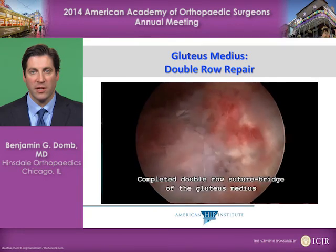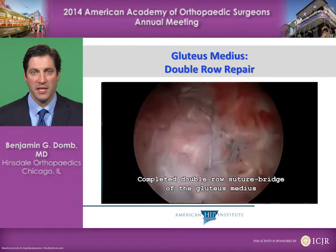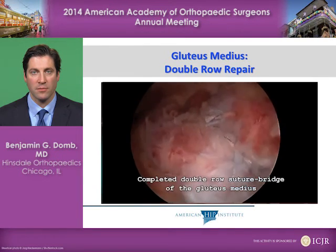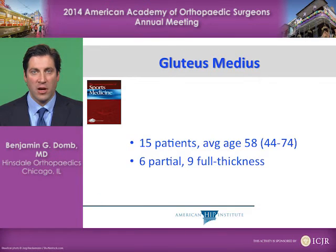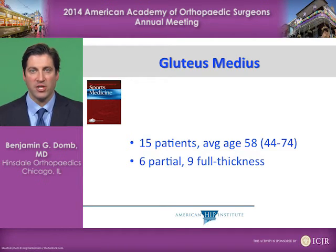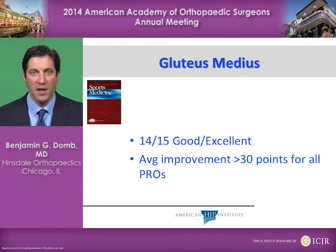Here is the completed double row suture bridge repair of this full thickness tear of the gluteus medius. We have studied the outcomes at two years, recently published in the American Journal of Sports Medicine. In our initial pilot group of 15 patients, average age 58 years old, all repaired endoscopically, we restricted weight-bearing for six to eight weeks. 14 out of 15 had good or excellent outcomes, with an average improvement of more than 30 points for all patient-reported outcome scores.